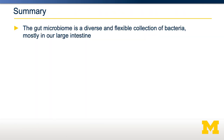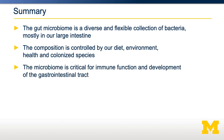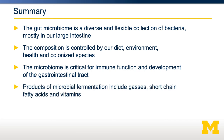In summary, the gut microbiome is a diverse and flexible collection of bacteria, mostly in our large intestine. It can adapt to our diet and is quite responsive. Its composition is controlled by diet, environment, health, and the colonized species. Our bodies can somewhat regulate the gut microbiota through the adaptive immune system. The microbiome is critical for immune function and development and maintenance of a healthy gastrointestinal tract. As our bacteria break down foods, several important products are generated, including gases, short-chain fatty acids, and vitamins.